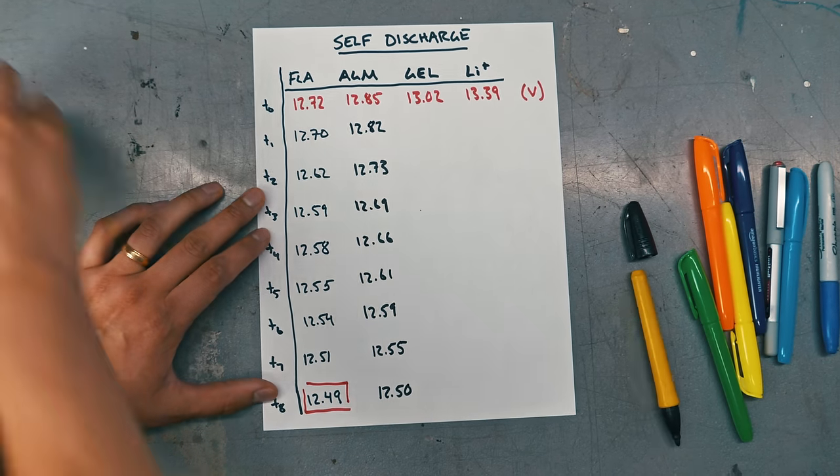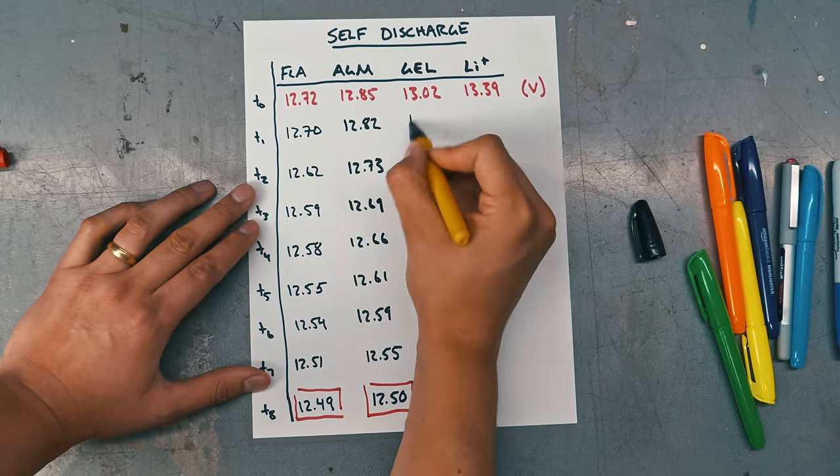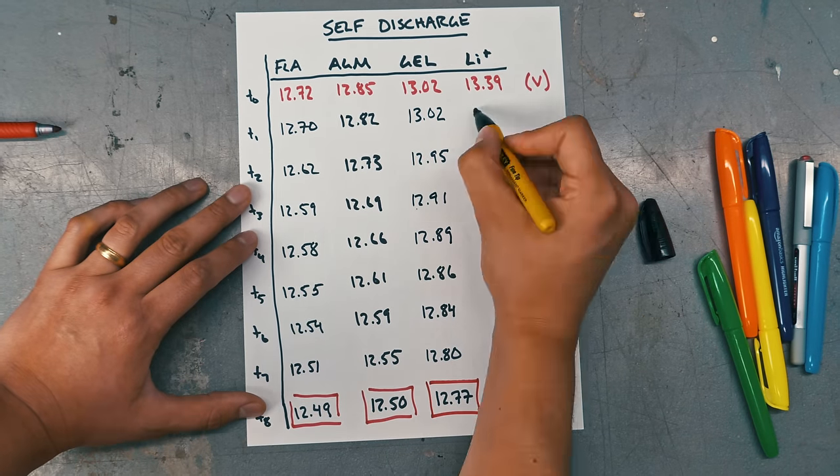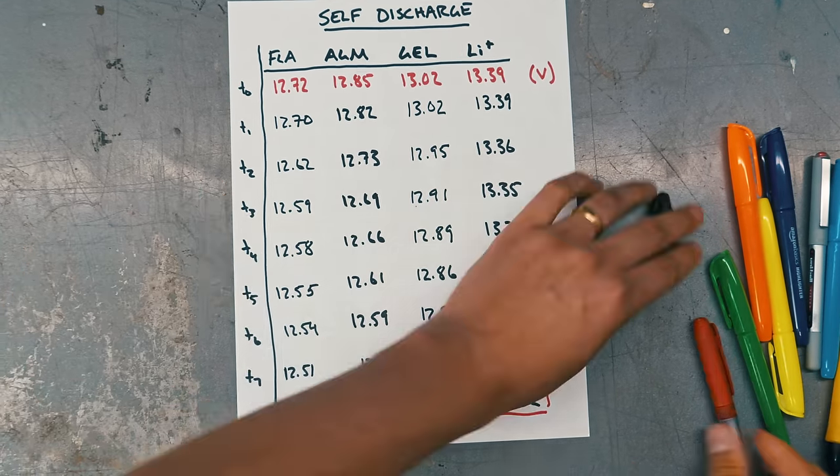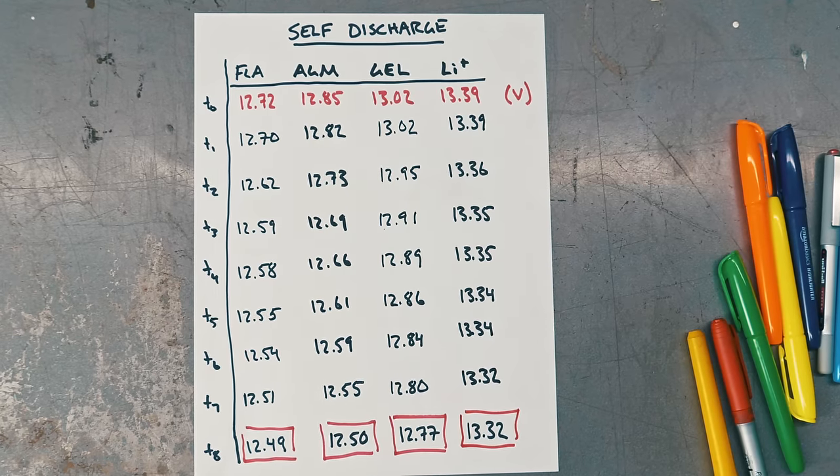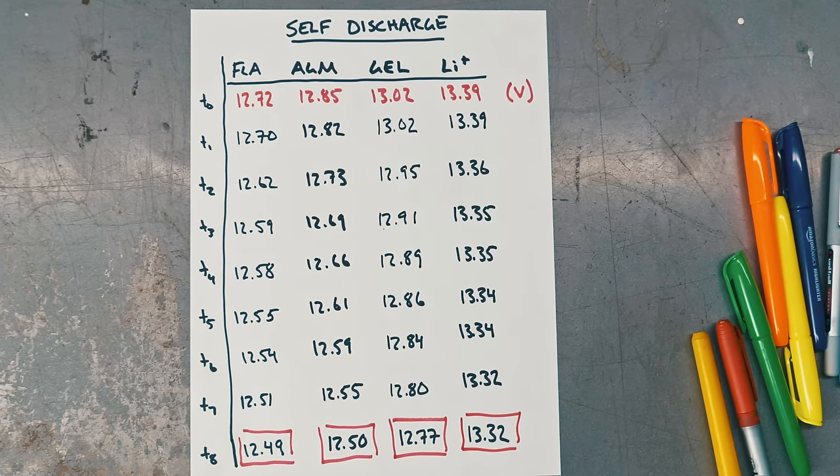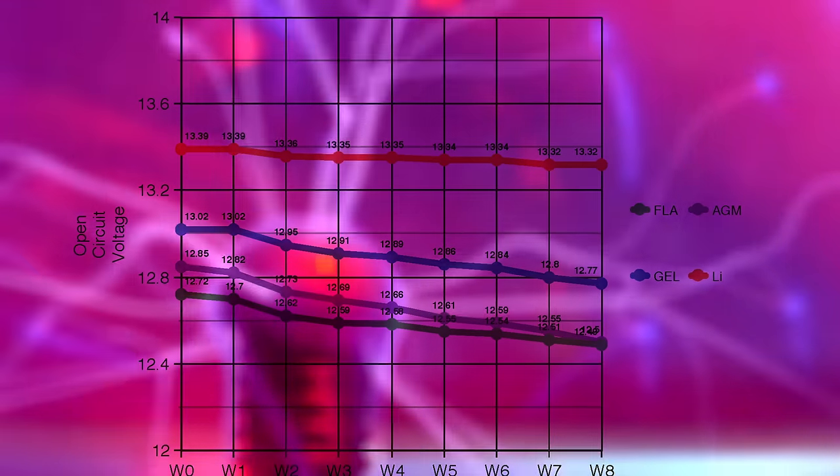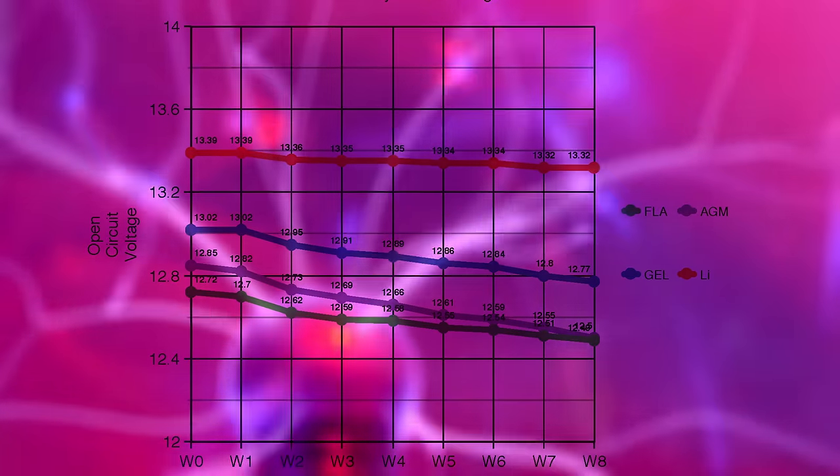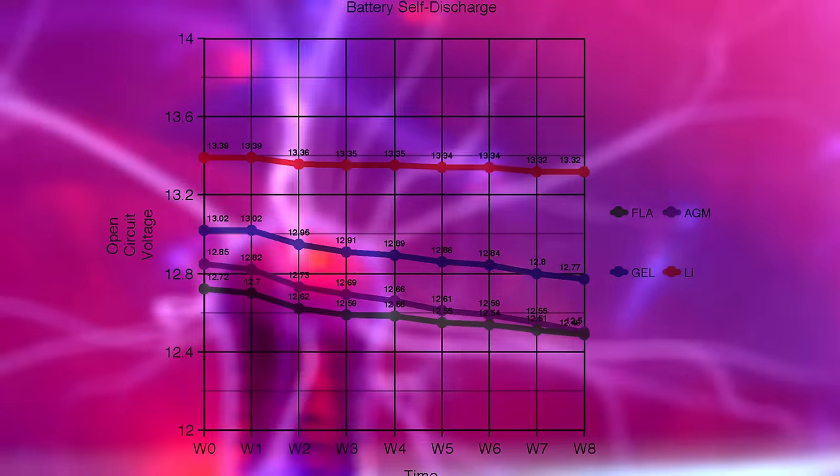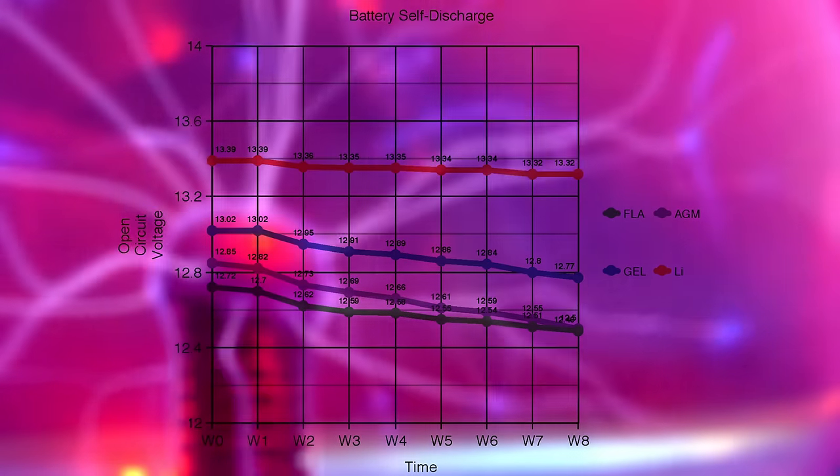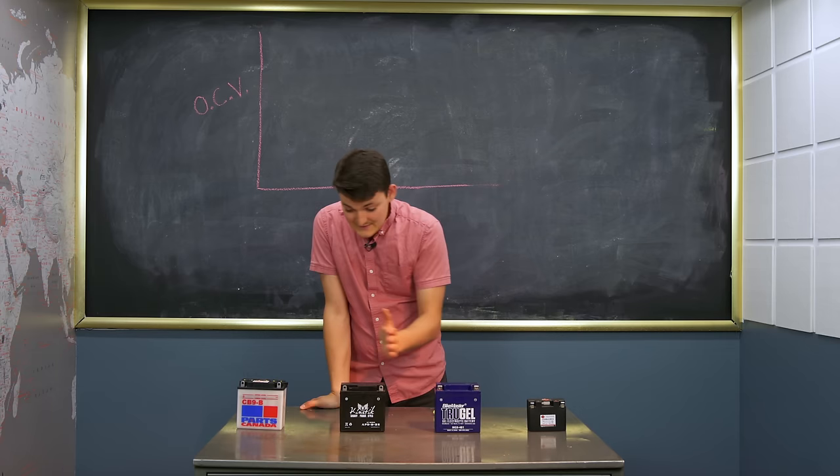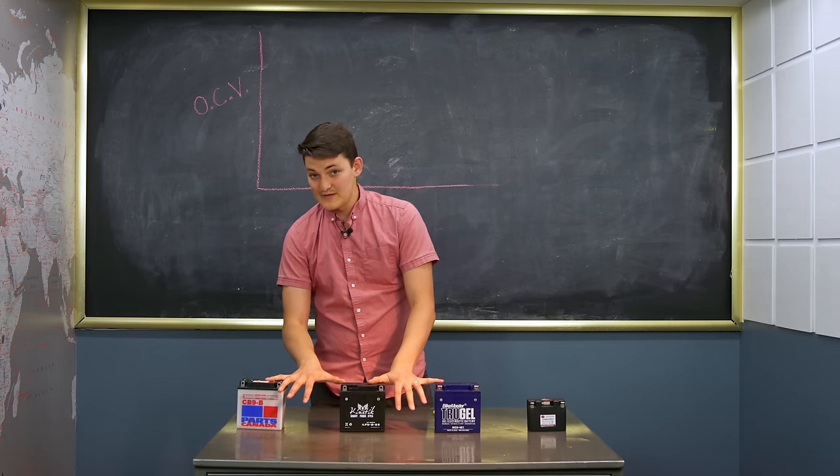The conventional battery lost 0.23 volts, considered a 20% state of discharge and perfectly normal for flooded lead acids. AGM leaked 0.35 volts, poor, gel lost 0.25 to the ether, and lithium dropped a mere 0.07 volts. We are comparing apples to oranges to plums to prunes, because each starts with a different open circuit voltage and a different scale of discharge, but it's still clear that lithium stores best. For all the others, I'd want a trickle charger through winter.